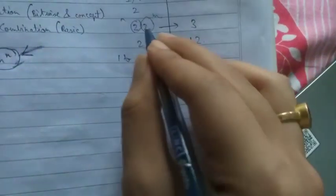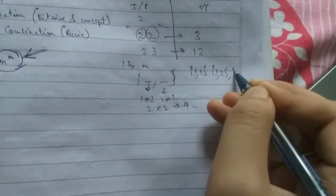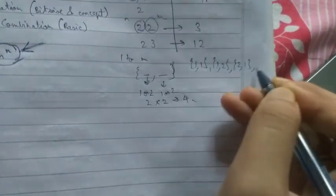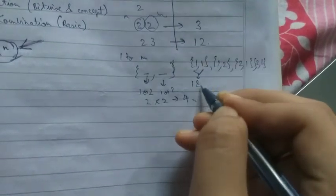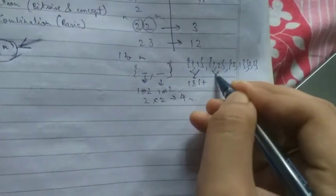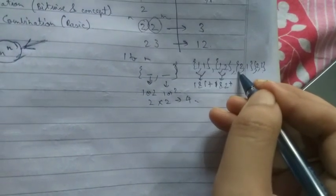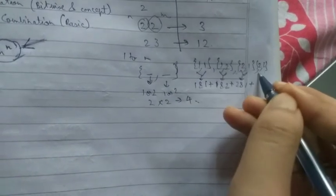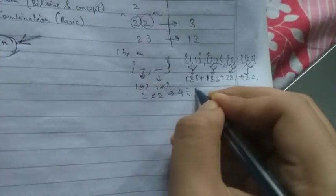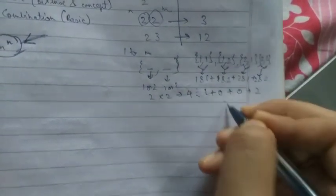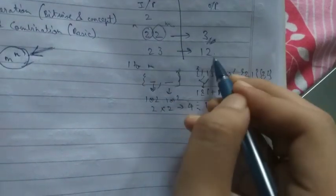For the first case, the possible arrays are: 1,1 — 1,2 — 2,1 — and 2,2. The output is the sum of AND of all elements for each array: 1 AND 1 = 1, 1 AND 2 = 0, 2 AND 1 = 0, 2 AND 2 = 2. So the answer is 1 + 0 + 0 + 2 = 3.